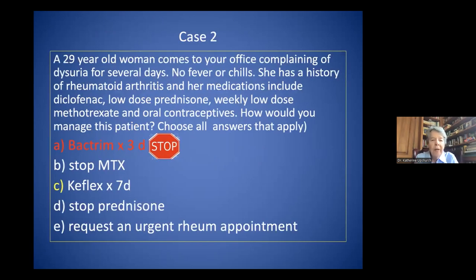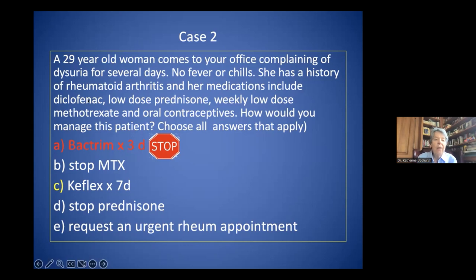Here's another case: a 29-year-old woman comes to your office complaining of dysuria for several days, no fever or chills. She has a history of rheumatoid arthritis, and her medications include diclofenac, low-dose prednisone, weekly low-dose methotrexate, and oral contraceptives. How would you manage this patient? The bottom line is you don't want to give her Bactrim — that's trimethoprim-sulfamethoxazole — because of the interaction with methotrexate. You don't have to stop the methotrexate or the prednisone. It would be advisable to get her in to see a rheumatologist. Keflex is the correct answer.